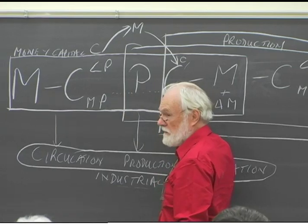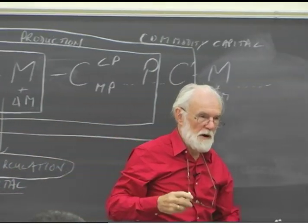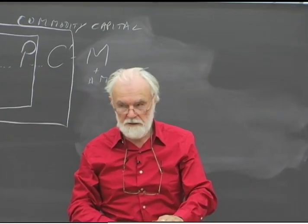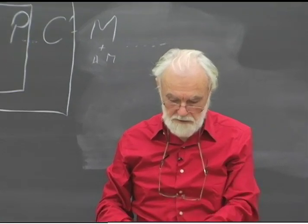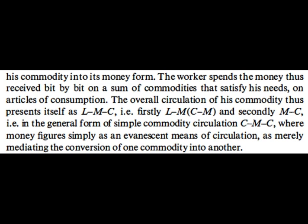When it's in this loop, the money is no longer functioning as capital — it's functioning simply as money. Even though it re-enters the circulation process, a part of it goes out of the circulation of capital. As he says, the worker spends the money thus received bit by bit on commodities that satisfy his needs — articles of consumption. The overall circulation of his commodity thus presents itself as LMC, or CMC — where money figures simply as an evanescent means of circulation mediating the conversion of one commodity into the other.